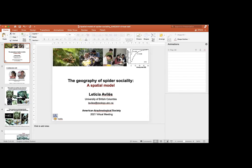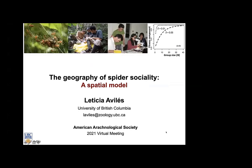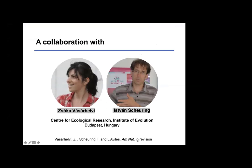Today I'd like to talk about work I did this past year in collaboration with colleagues from the Center for Ecological Research and the Institute of Evolution in Budapest, Hungary. This is work that we currently have in revision at the American Naturalist. The talk is titled: The Ecology of Spider Sociality — A Spatial Model.